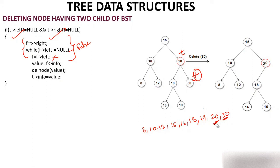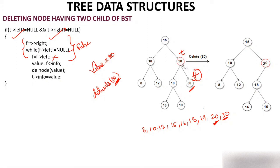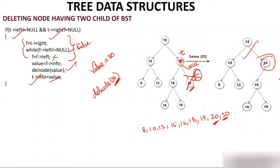Store f->info (which is 30) in variable 'value'. Then call del_node(30) — this calls the zero-child deletion function. Del_node will set the right child of 20 to null. Then set t->info = value (which is 30). So the value 30 comes into node 20's position. The node that was 20 now becomes 30, and the right child is already removed. Everything else remains the same.